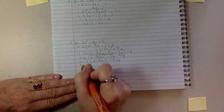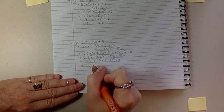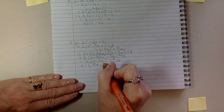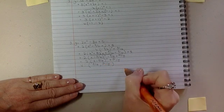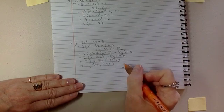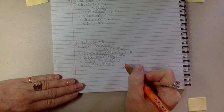Yay! So my vertex is 3 quarters and 31 over 8. Ta-da! You'll use completing the square a ton so learn to love it, it'll be a great one.